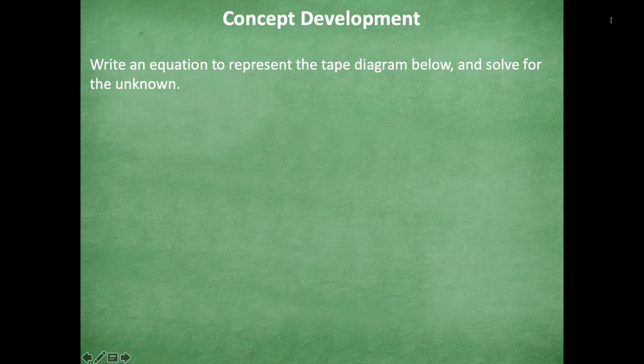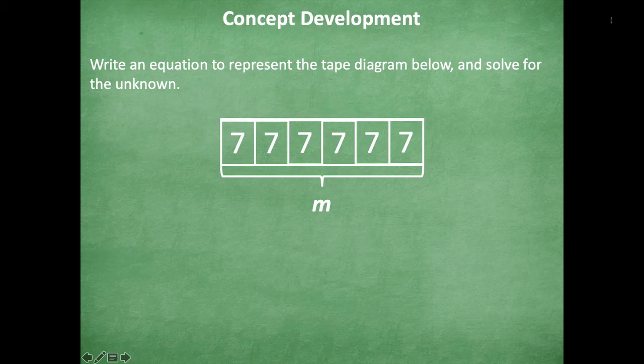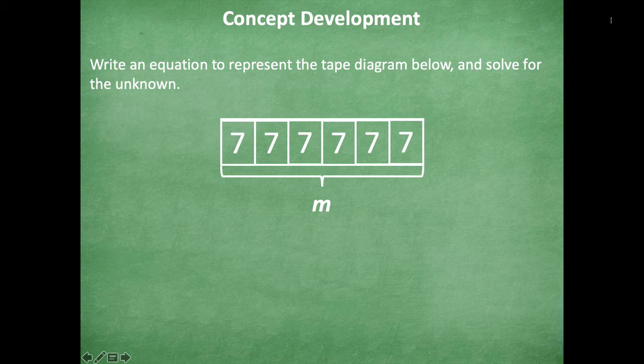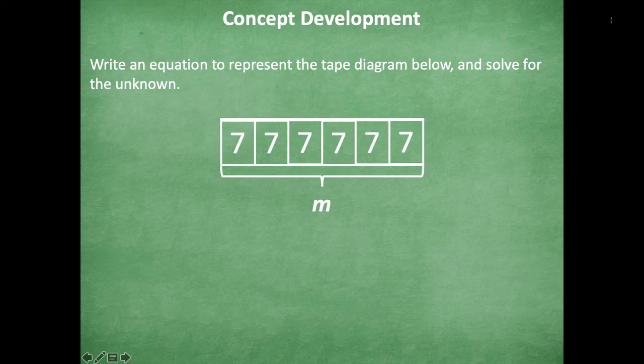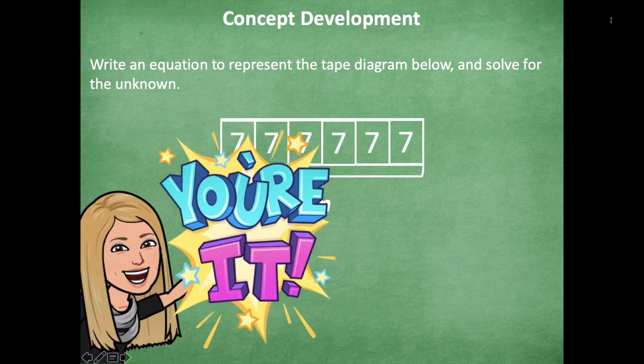We're going to write an equation to represent a tape diagram below and solve for the unknown. So when you're solving for the unknown, you have to label what the unknown is. So M in this example equals blank. So you have to solve and say M equals whatever it equals on your paper. Go ahead and write an equation to represent that. Click play when you're ready to go over it together.